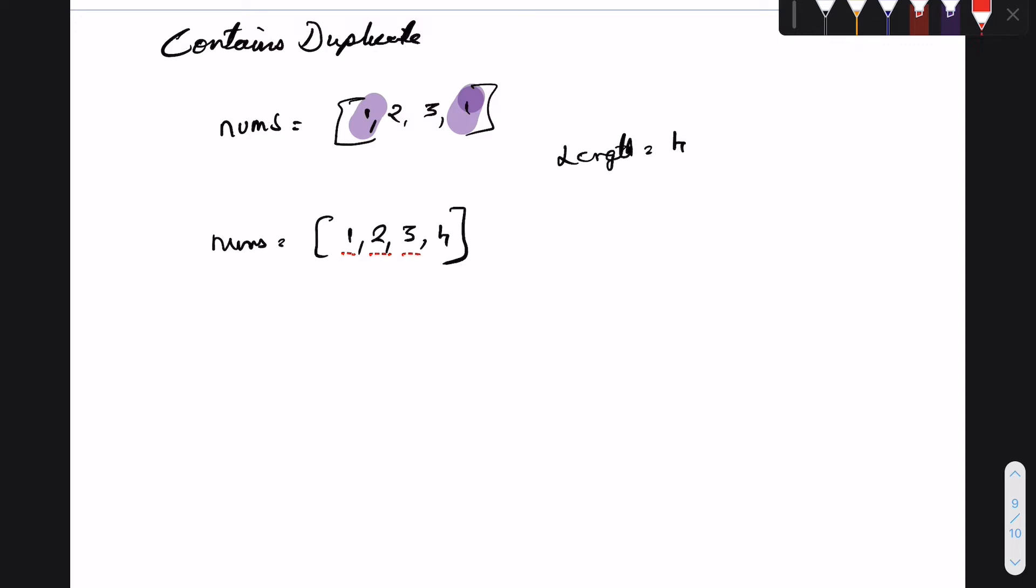We have an array which has four elements and if you see, neither of the elements are repeating. One does not exist twice, neither is two, neither is three, neither is four. In this case we just need to return false because there are no elements in the array which are repeating.